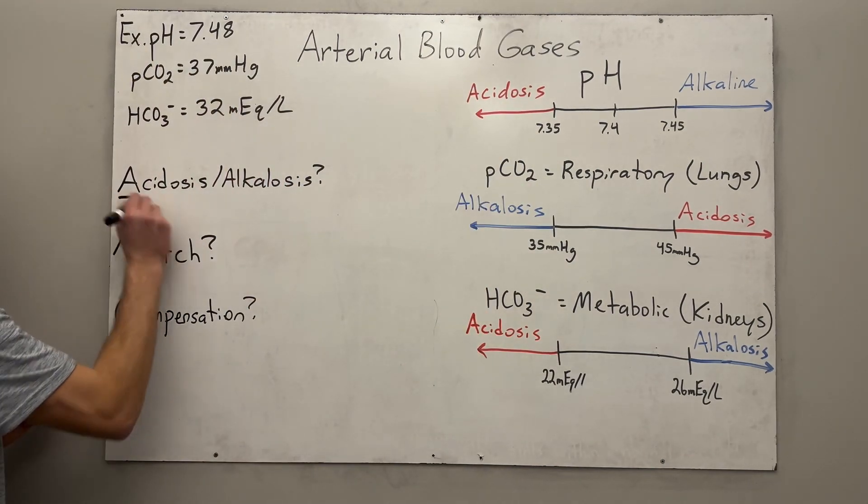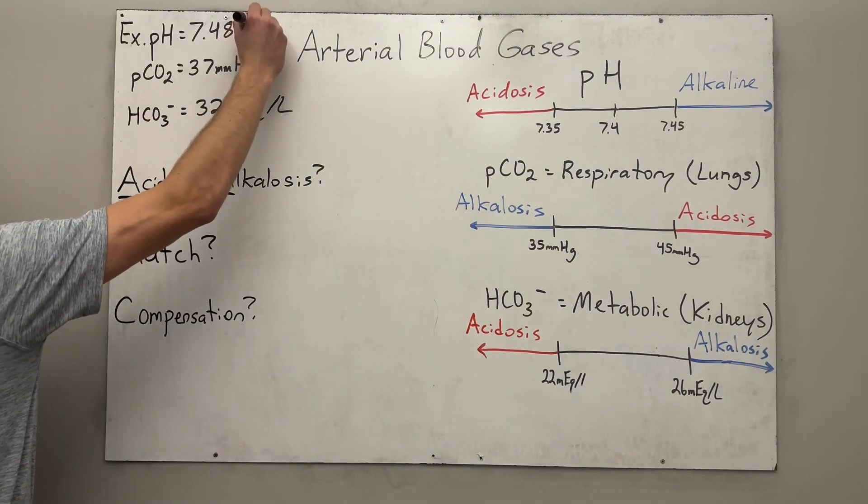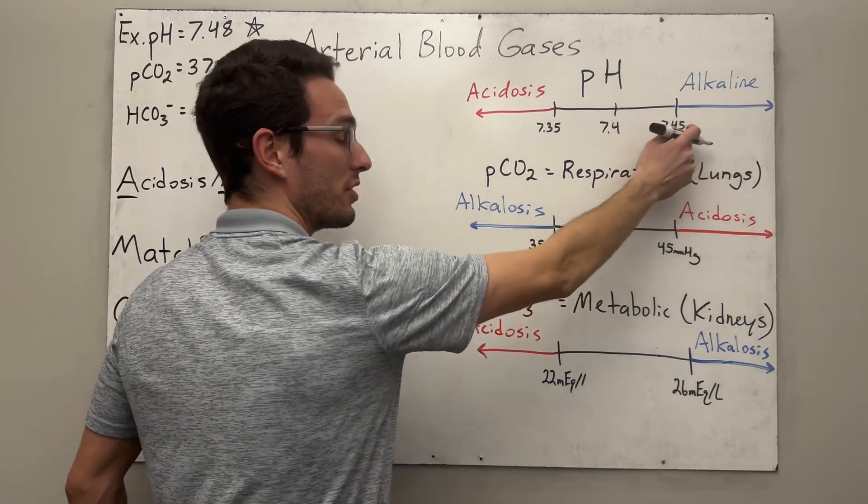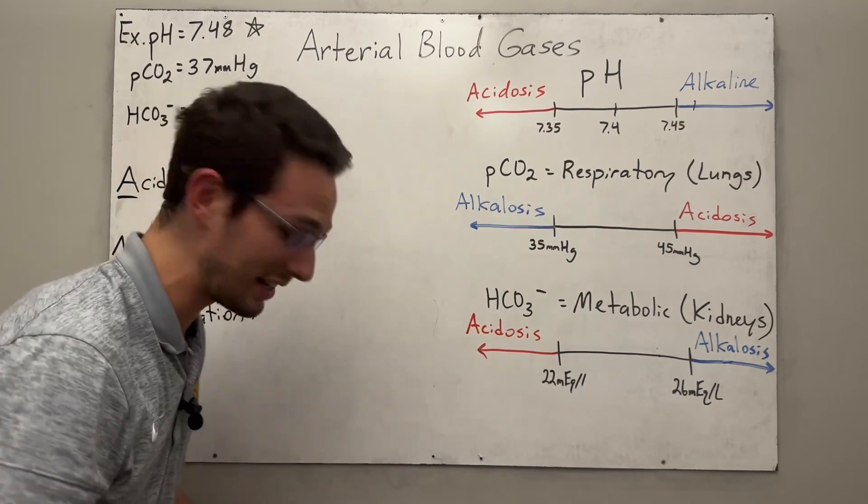The first step is to determine the A. Is it acidotic or alkalotic? So we have to look at the pH for that. So if we look at our pH, 7.48, we see that it rises above the 7.45 normal value. So we're going to be in alkalosis.